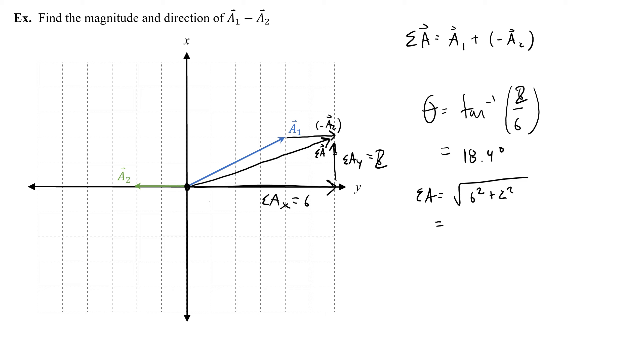And then the magnitude is going to be the square root of 6 squared plus 2 squared, which gives me 6.3. So I would write this, the vector a, the sum of those two vectors. Again, the sum of a1 plus negative a2, so it's still a sum, as 6.3 comma 18.4 degrees.